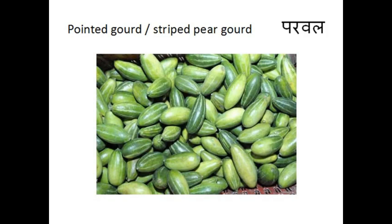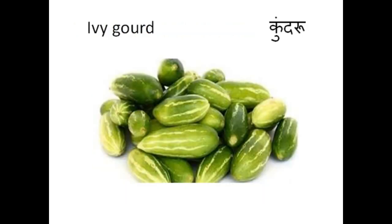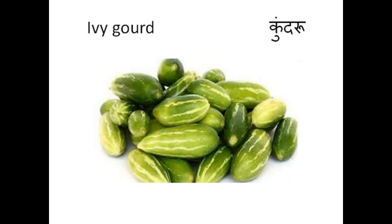Pointed gourd, or stripped pear gourd, means parval. Ivy gourd — ivy gourd means kundru. Cluster beans — cluster beans means gamar fali.